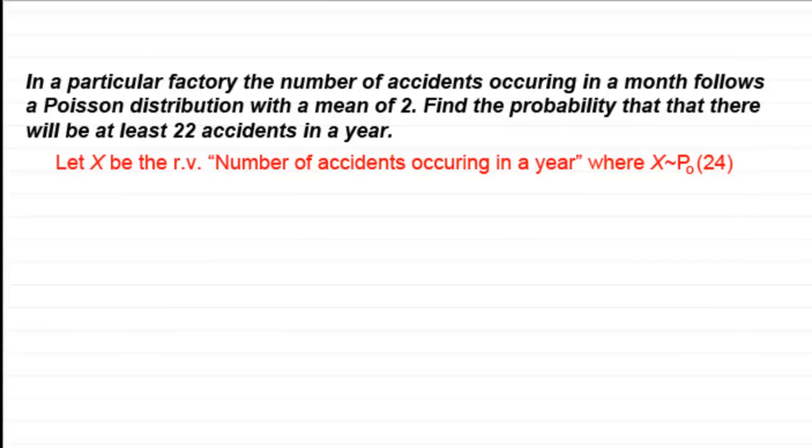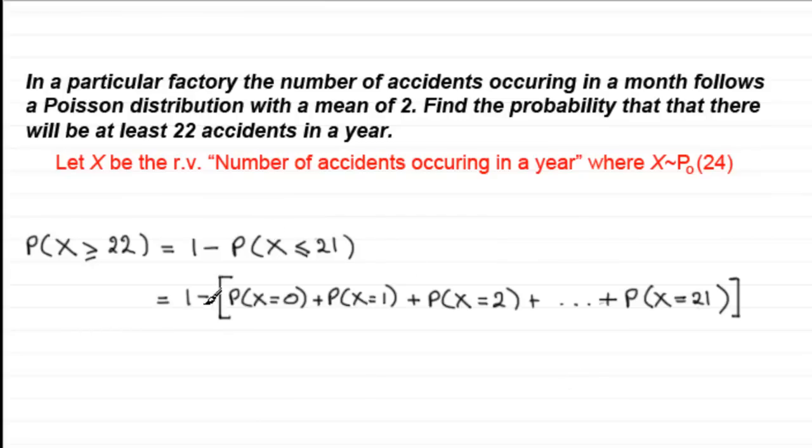Then I would normally want to work out the probability that X, the number of accidents, is greater than or equal to 22, at least 22. That would mean working out the probability that X equals 22 plus 23, 24 and so on, which would be endless. So knowing that all probabilities add up to 1, it's easier if I just do 1 minus the probability that X is less than or equal to 21. That means working out 1 minus the probability that X equals 0 plus the probability that X equals 1 and so on, all the way up to 21. That's a lot of calculations.